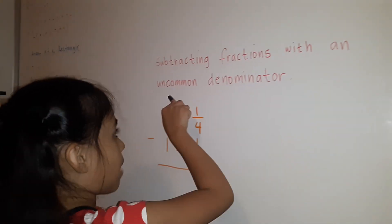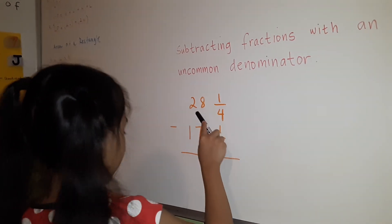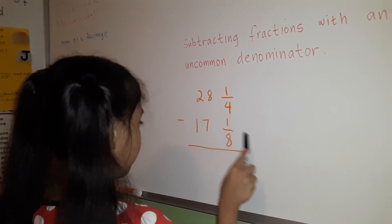Subtracting fractions with uncommon denominators: 28 and 1/4 minus 17 and 1/8 equals...